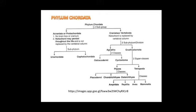Protochordata — 'protos' means primitive — are primitive chordates without the cranium or brain box. The notochord may persist throughout life as it is not replaced by the vertebral column. Acraniata or Protochordata is divided into two groups: Urochordata and Cephalochordata.